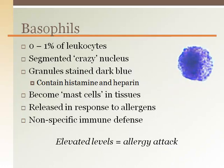Basophils are the rarest of the white blood cells. They can be difficult to identify, as their segmented nucleus is often obscured by the dark blue stained granules. The granules are filled with a heparin-like anticoagulant and histamine. The histamine causes vasodilation and increases fluid accumulation in affected tissue areas, which is why you get a stuffy head and runny nose when exposed to an allergen — and why an antihistamine helps. Basophils are also part of our nonspecific defense system, and elevated levels are seen when a person is exposed to allergens.